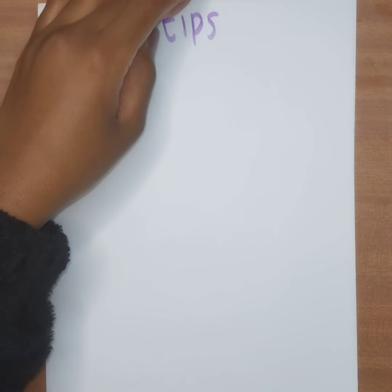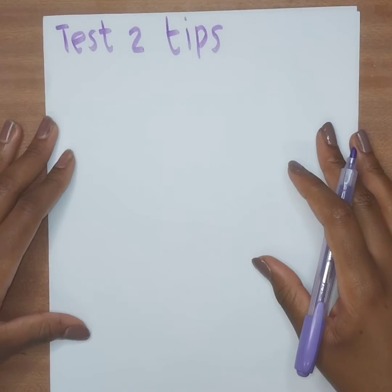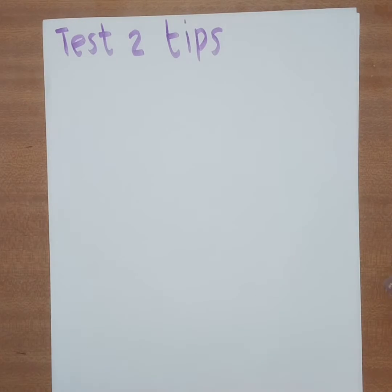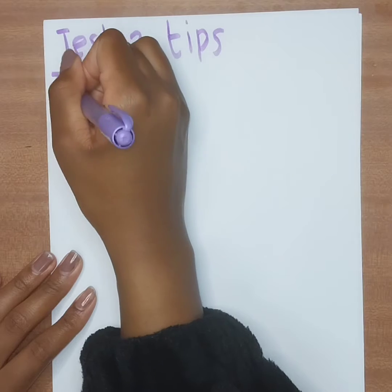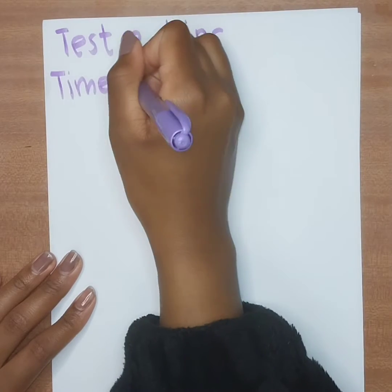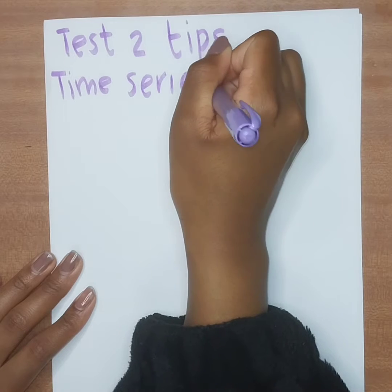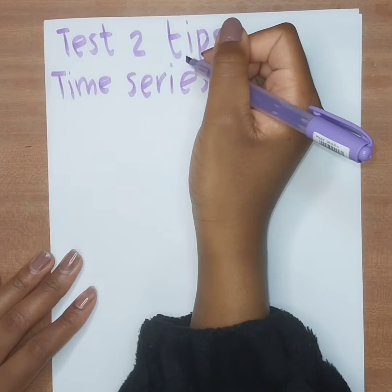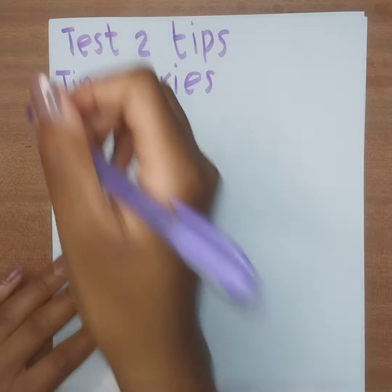Test Two is doable, it's nothing too deep. The first thing I want you to know is that we have two topics covered: Time Series and Probability. The first thing to know is how to calculate the initial trend.